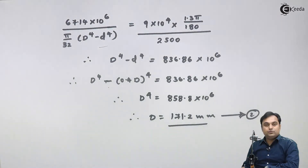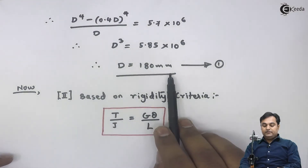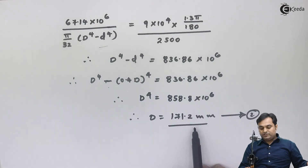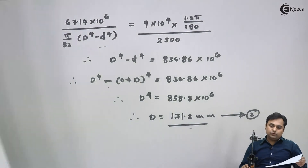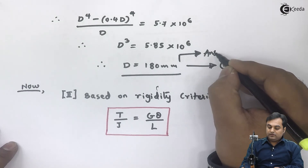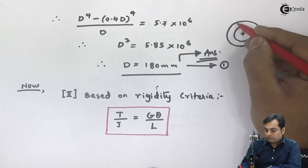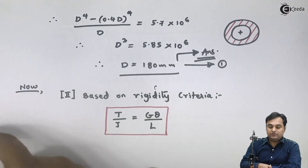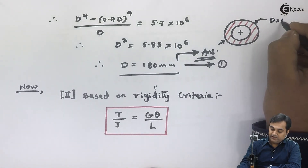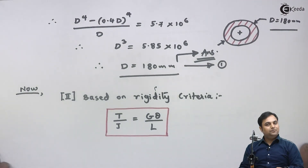Comparing equation 1 and equation 2: based on strength criteria the diameter is 180 mm, and based on rigidity criteria it is 171.2 mm. We must select the maximum value, which is 180 mm. So the external diameter of the hollow shaft is 180 mm, and with this we complete the question.